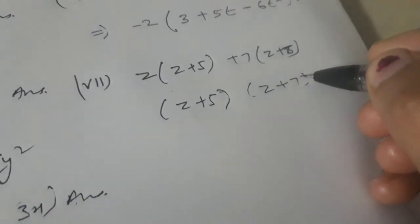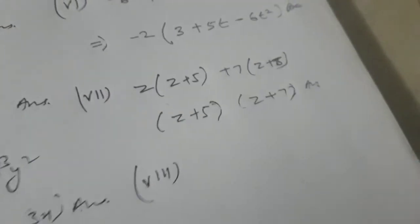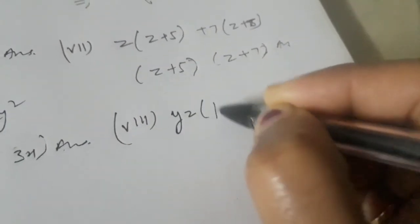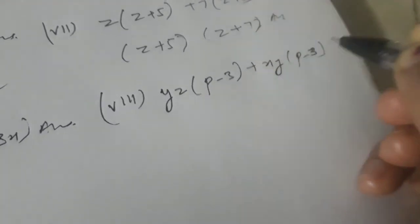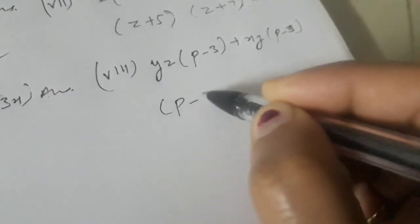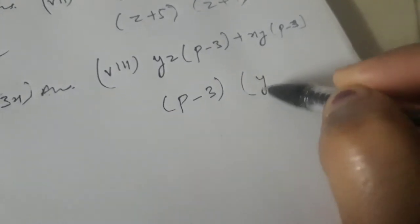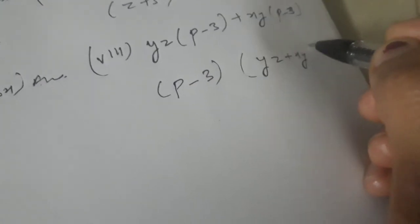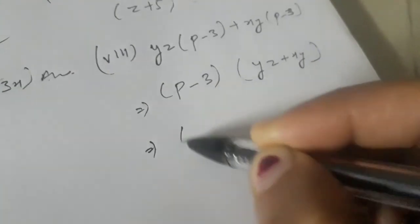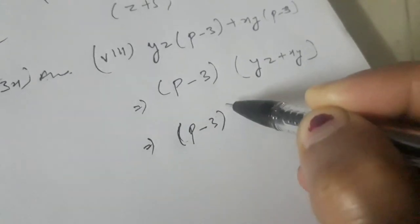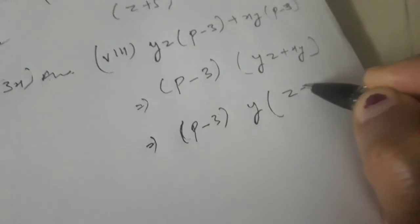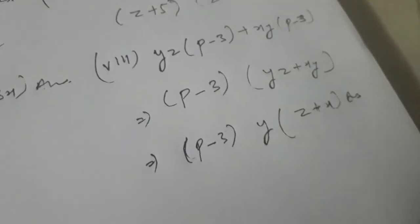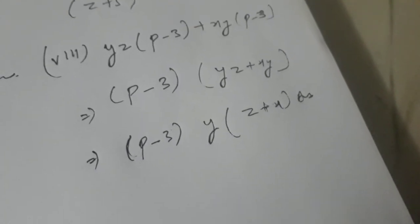The eighth part is yz(p minus 3) plus xy(p minus 3). Here we can see (p minus 3) is a common factor, and yz plus xy can be taken as a single factor. In the next step we can factorize further: y is common in yz plus xy, giving y(z plus x). So the final answer of question 8 is (p minus 3) times y(z plus x).